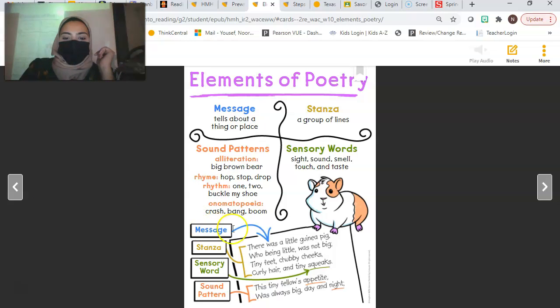So, here, they give you an example. I'm going to read it. It says, there was a little guinea pig who, being little, was not big. Tiny feet, chubby cheeks, curly hair, and tiny squeaks. This tiny fellow's appetite was always big day and night. So, the message is the very first sentence, which is, there was a little guinea pig. The stanza is the different parts of the poem, different sections. So, the first part is the first stanza.